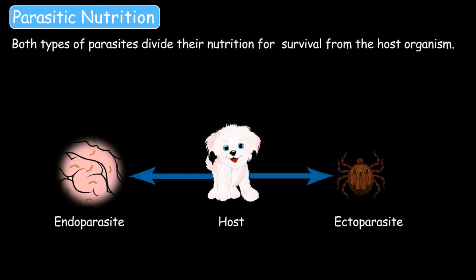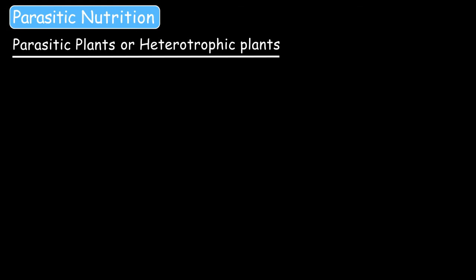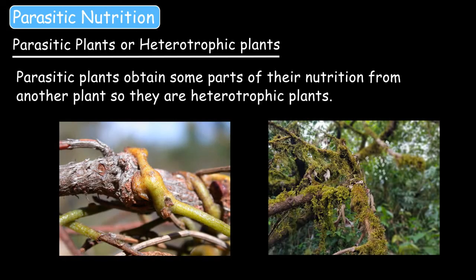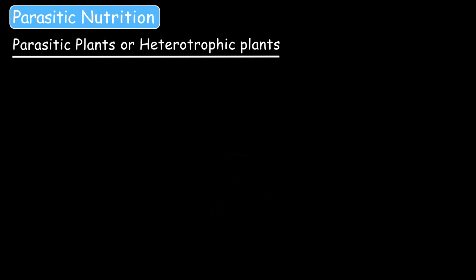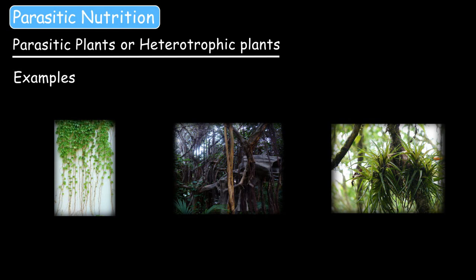Both types of parasites derive nutrition for survival from the host organism. Now let's learn about some parasitic or heterotrophic plants. Parasitic plants obtain some part of their nutrition from another plant, so they are heterotrophic plants. These plants form a vascular union with the host called a haustorium, which is used to derive nutrition from the host plant. The most common examples of parasitic plants are climbing vines, lianas, and epiphytes.